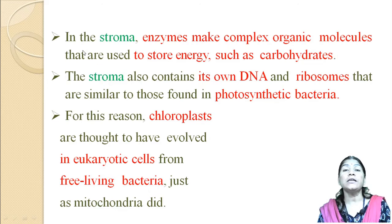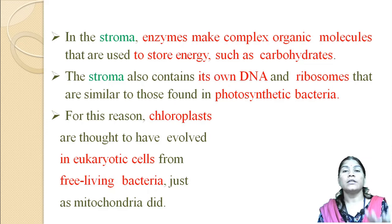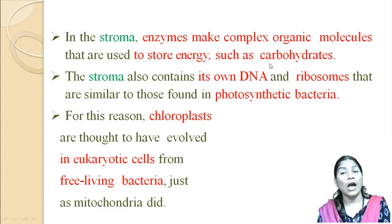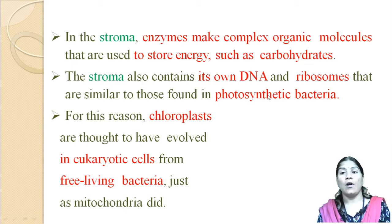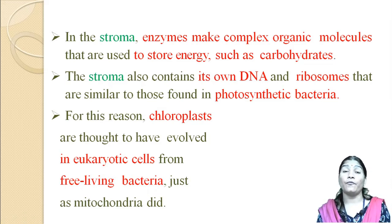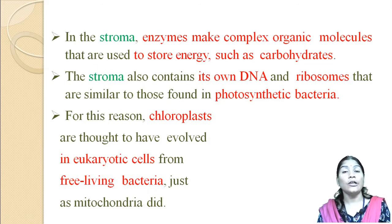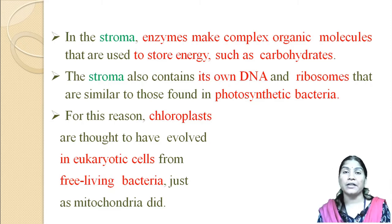In the stroma, there are various enzyme complexes and organic molecules used to store energy in the form of carbohydrates. The stroma also contains its own DNA and ribosomes, similar to those found in photosynthetic bacteria. For this reason, chloroplasts are thought to have entered the eukaryotic cell from free-living bacteria, just like the mitochondria.